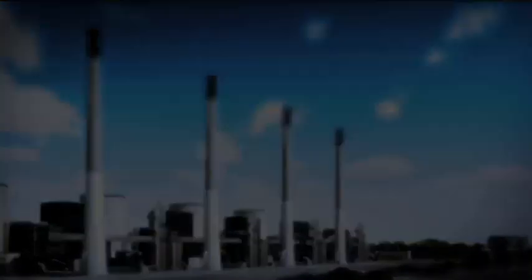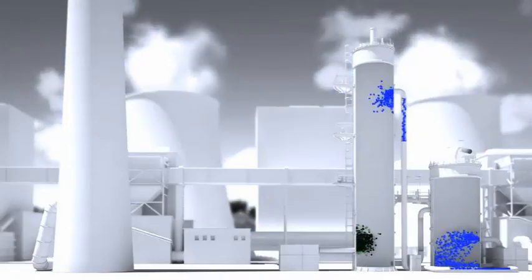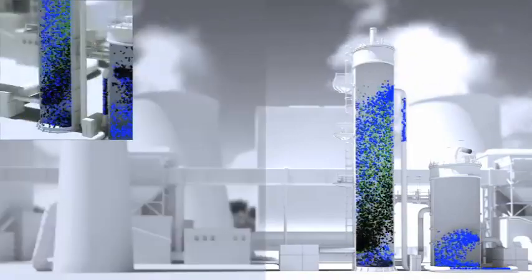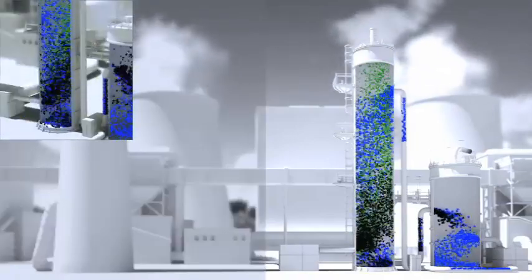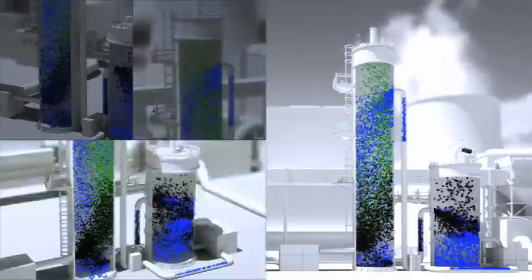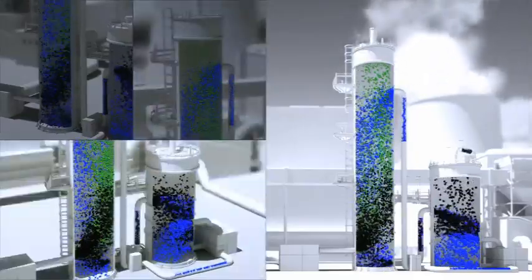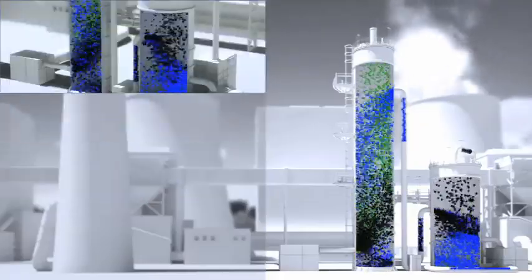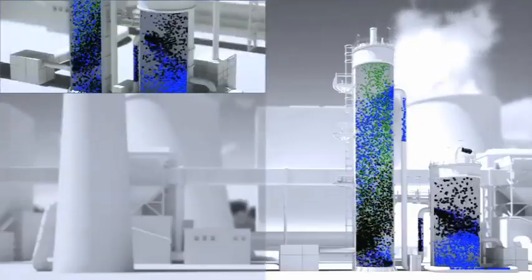The black particles entering the capture plant are carbon dioxide. The green particles are harmless gases like nitrogen and water vapor. The blue particles are a chemical called a solvent. It reacts with the carbon dioxide to produce two gas streams, one of pure CO2 and one of pure solvent.